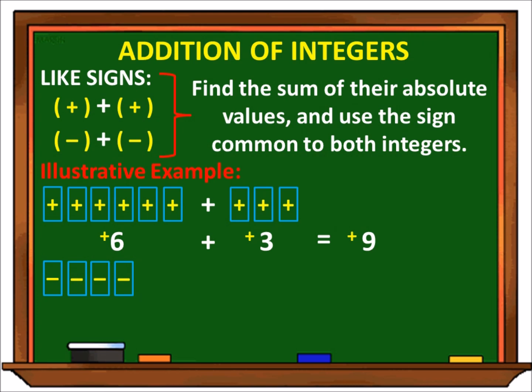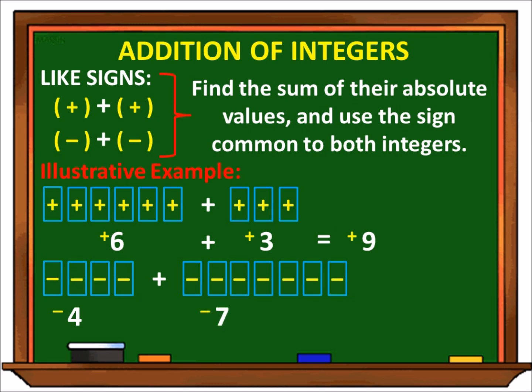Another example: halimbawa meron tayong 4 na negative plus 7 negative. Kaya ang given natin ngayon ay negative 4 at negative 7. Ganon din yung gagawin natin — kukopihin lang natin yung negative na sign at i-add lang natin yung absolute values nilang dalawa. Kaya, negative 4 plus negative 7 is equal to negative 11.